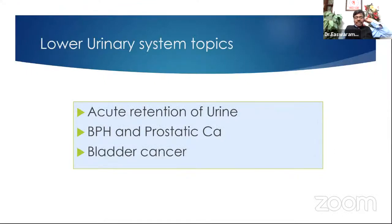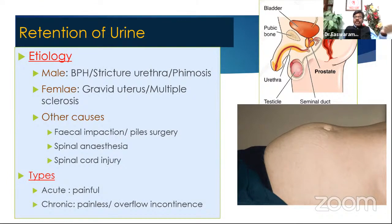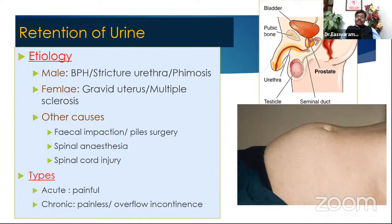With that break, let's continue quickly. Lower urinary tract — the next important problem as a CRRI is acute retention of urine. A patient comes at 2 or 3 AM unable to pass urine — a very uncomfortable and painful situation. The bladder is distended up to the umbilical level. They may have had preceding difficulty passing urine for a few days. In males, the common causes are benign prostatic hypertrophy, urethral stricture, or even phimosis.